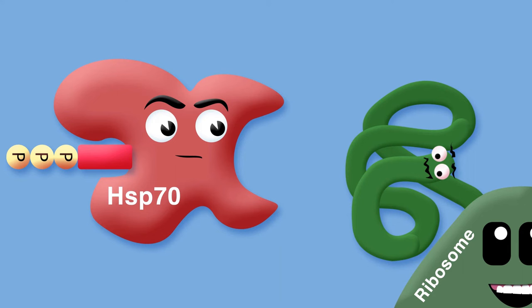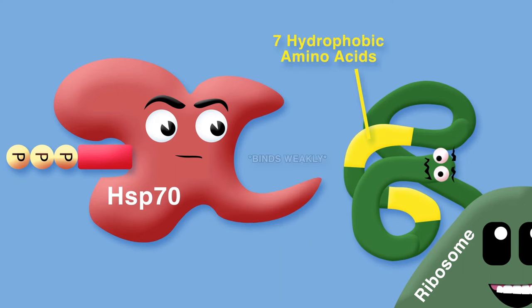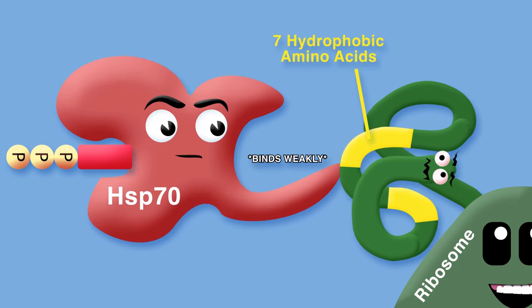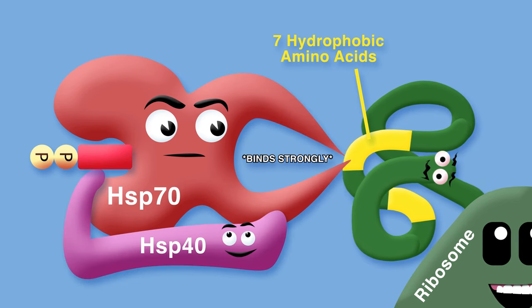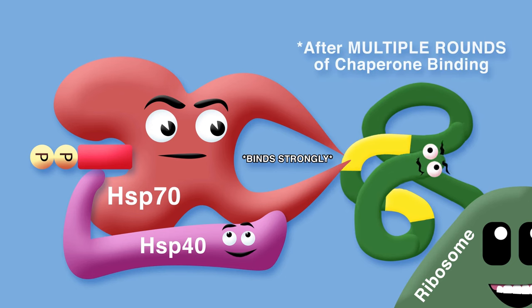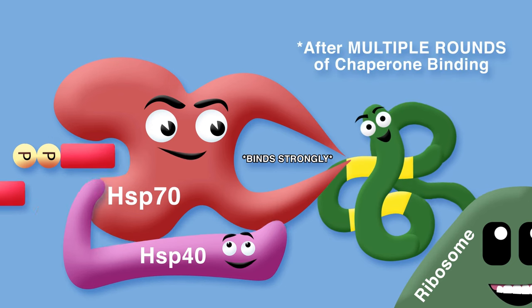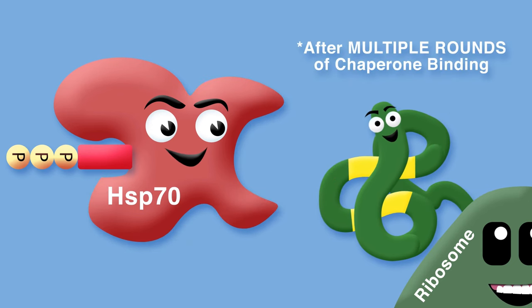Hsp70 acts early on in the process of protein folding, binding to polypeptide chains emerging from ribosomes where there is a chain of 7 hydrophobic amino acids. Hsp70 is aided by Hsp40s, and many cycles of ATP hydrolysis are generally required to fold a single polypeptide chain correctly.